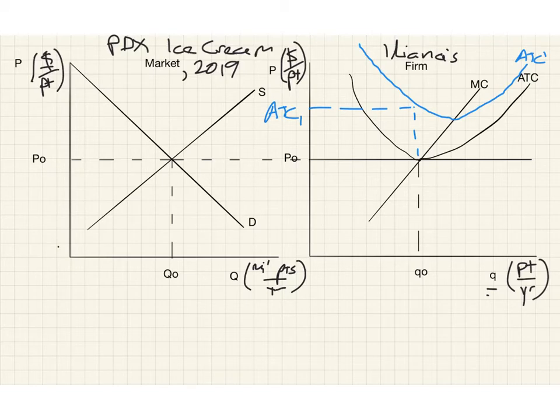Now average total costs are higher than price. So P minus ATC, the profit per pint of ice cream is now negative. And Ileana is running a loss. And we might even label that just to be super clear, short run loss. And that's it. And in some ways, maybe in all ways, changes in fixed costs are the easiest cases to analyze graphically in the short run anyway. And I suppose the long run too. All right. So that's the short run.